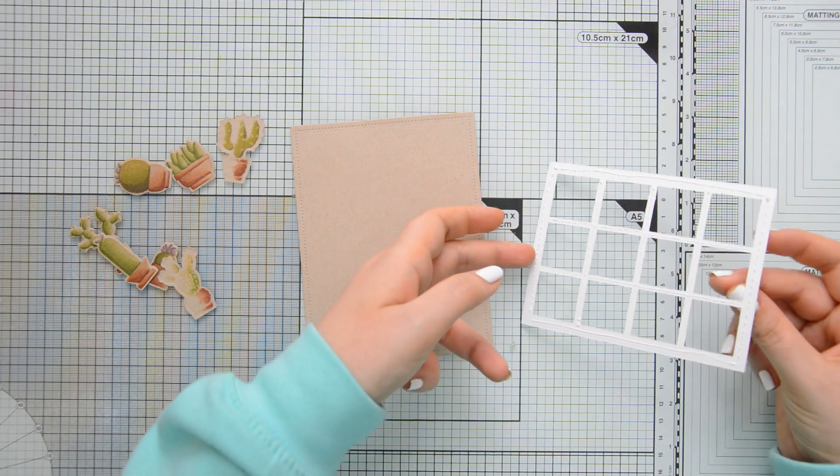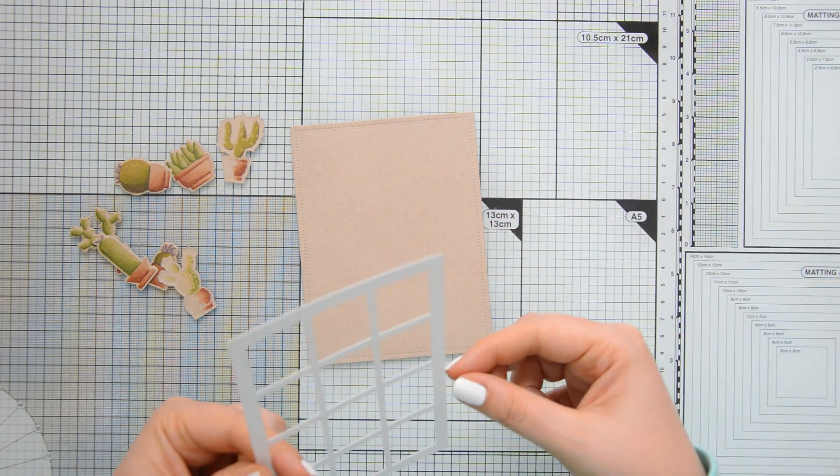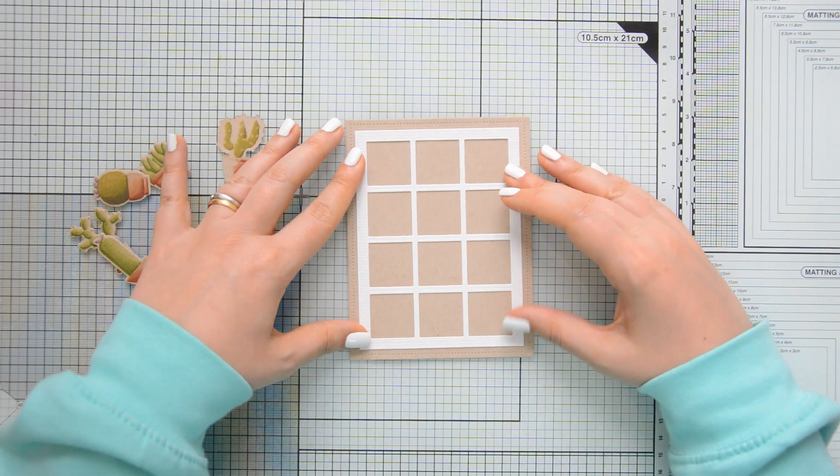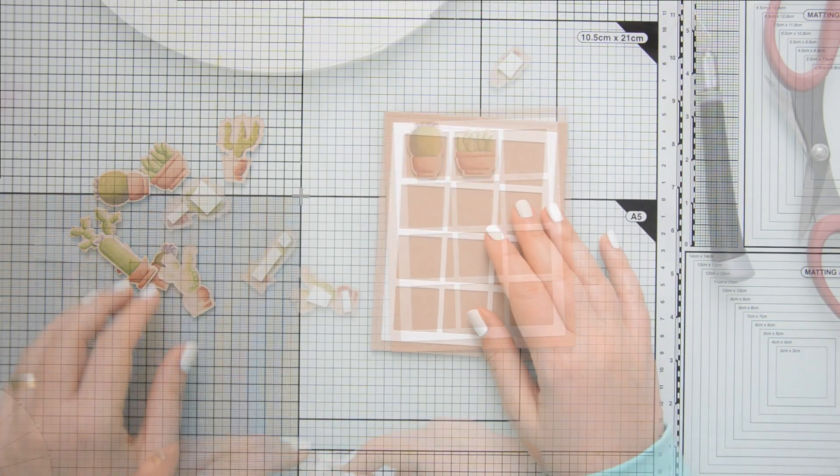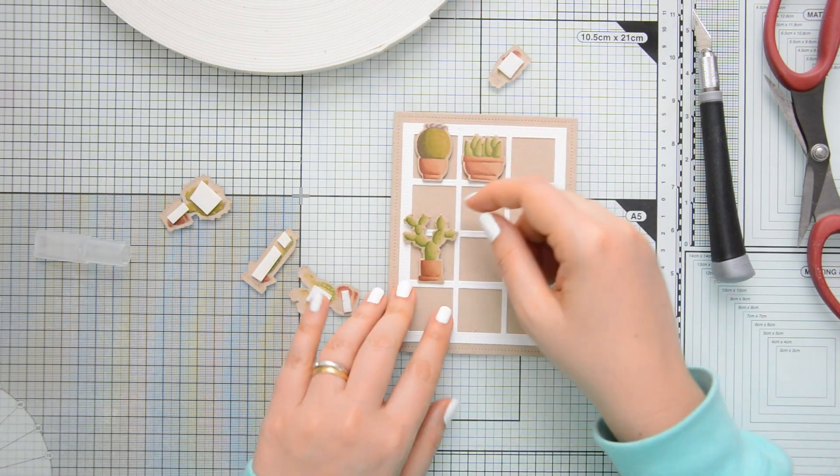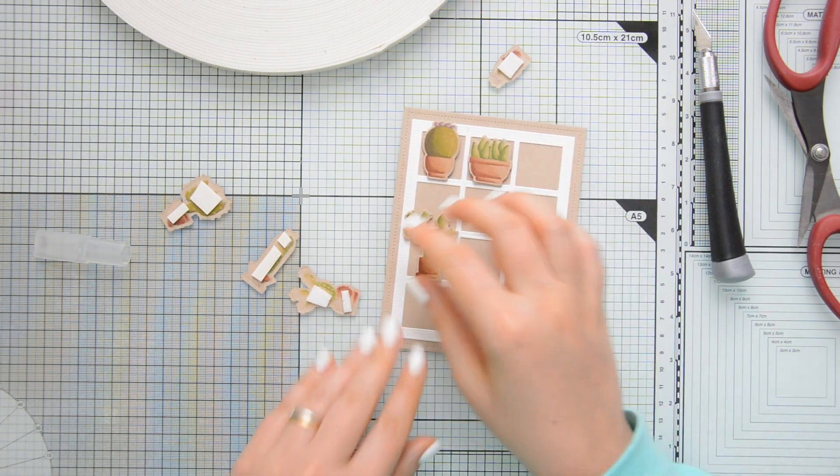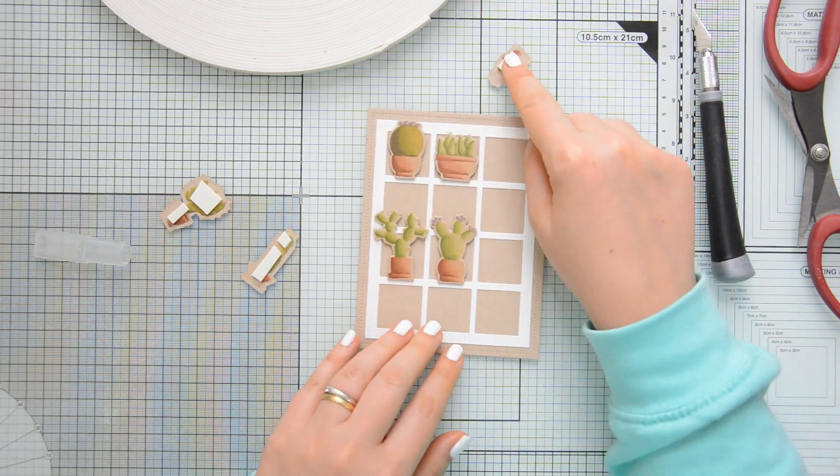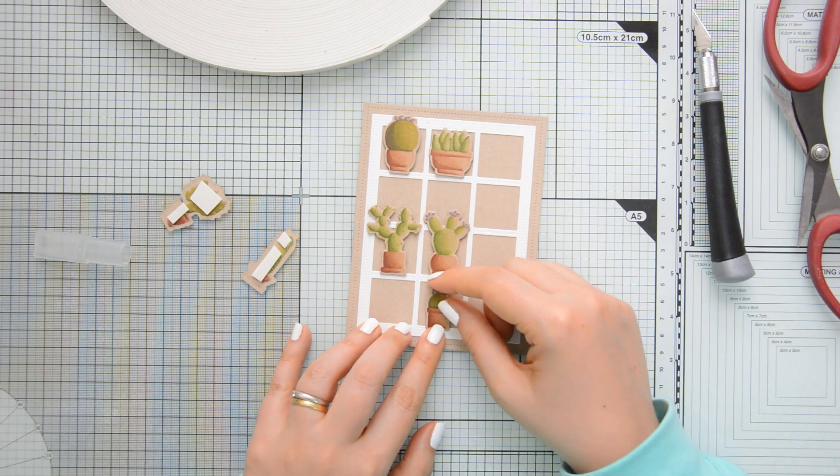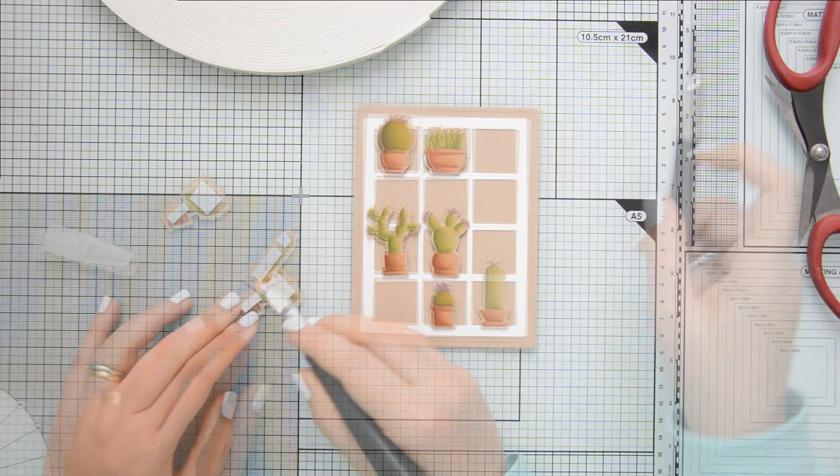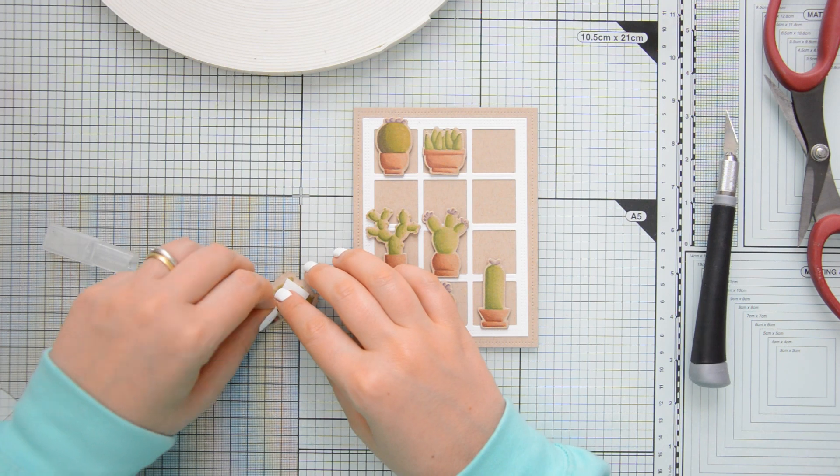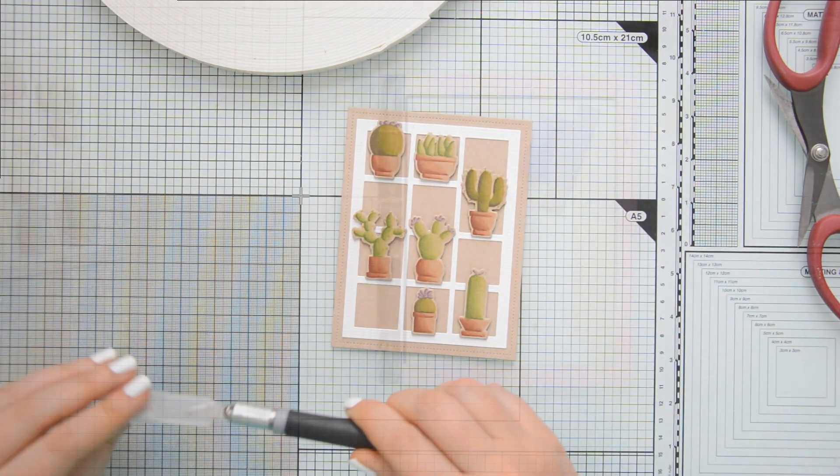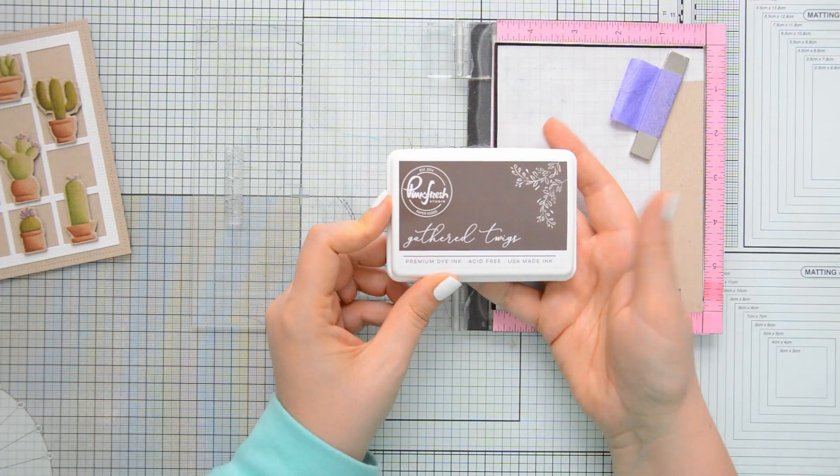I adhered the squared grid on my card base using my Studio Katia liquid glue because that gives me a little bit of wiggle time to position everything correctly and make sure that everything is straight and centered. To add a little bit of extra interest to the card, I decided to raise my images on some Studio Katia foam tape. I first arranged them on my card base without actually adhering them. I took a picture and I used that as a reference, and then I went ahead and glued everything in place.